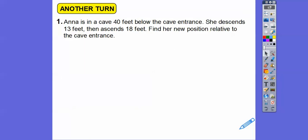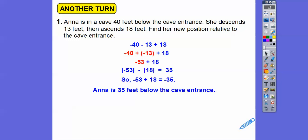Anna is in a cave 40 feet below the cave's entrance. She descends, means she goes down, 13 feet, then ascends, which means she goes back up 18 feet. Find her new position relative to the cave's entrance. So negative 40 would be 40 feet below and then down 13, so we're going to subtract 13. And then she goes back up 18, so we're going to add 18. Negative 40 plus negative 13 is negative 53. Negative 53 plus 18 is negative 35. Anna's 35 feet below the cave's entrance.